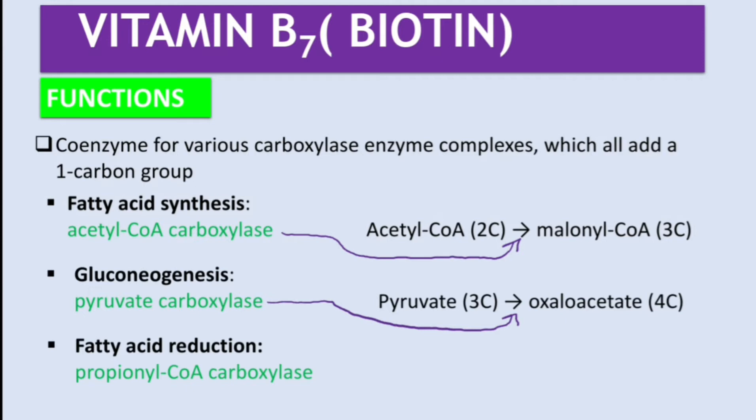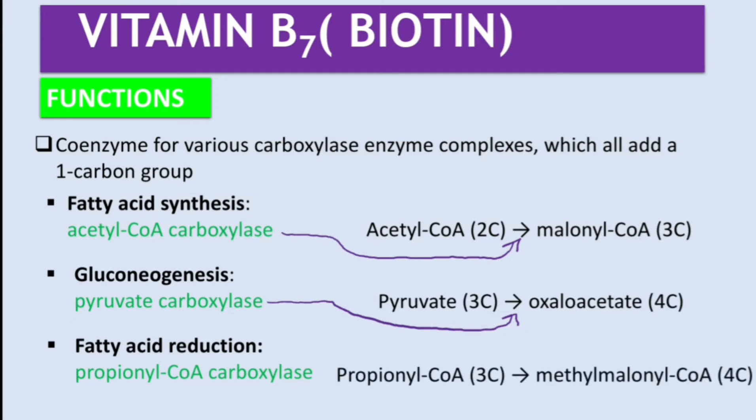The third process involves fatty acid oxidation, where the enzyme is propionyl-CoA carboxylase. Branched-chain amino acids like valine and some odd-chain fatty acids lead to a three-carbon molecule called propionyl-CoA. This enzyme converts propionyl-CoA (three carbons) into methylmalonyl-CoA (four carbons).